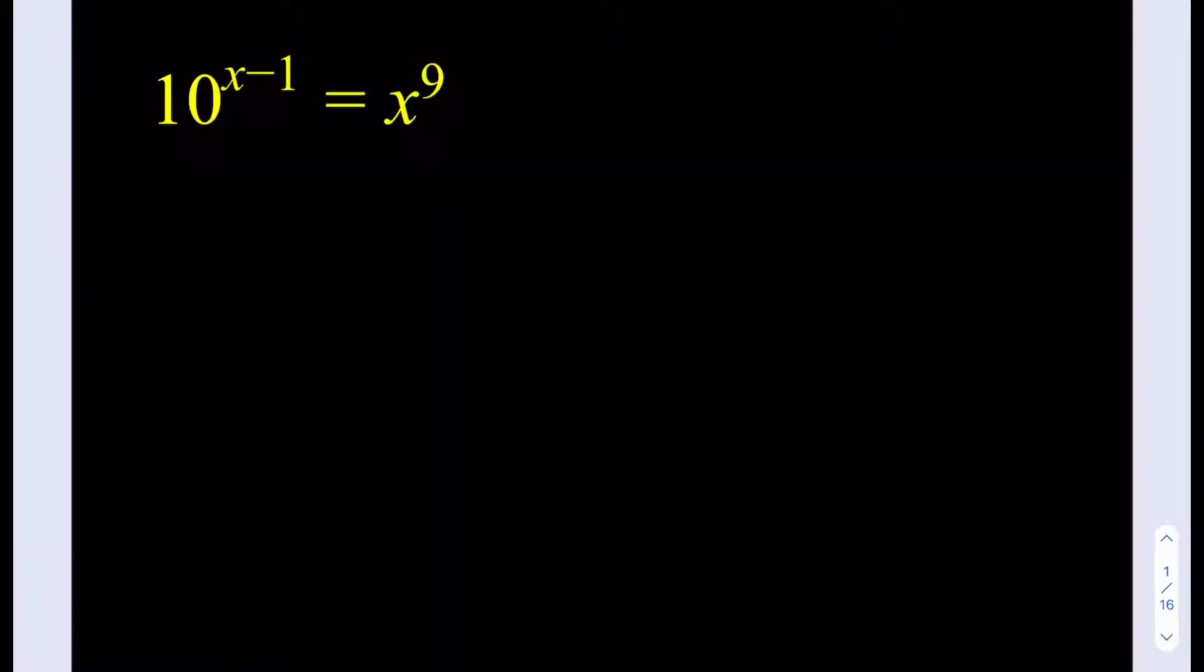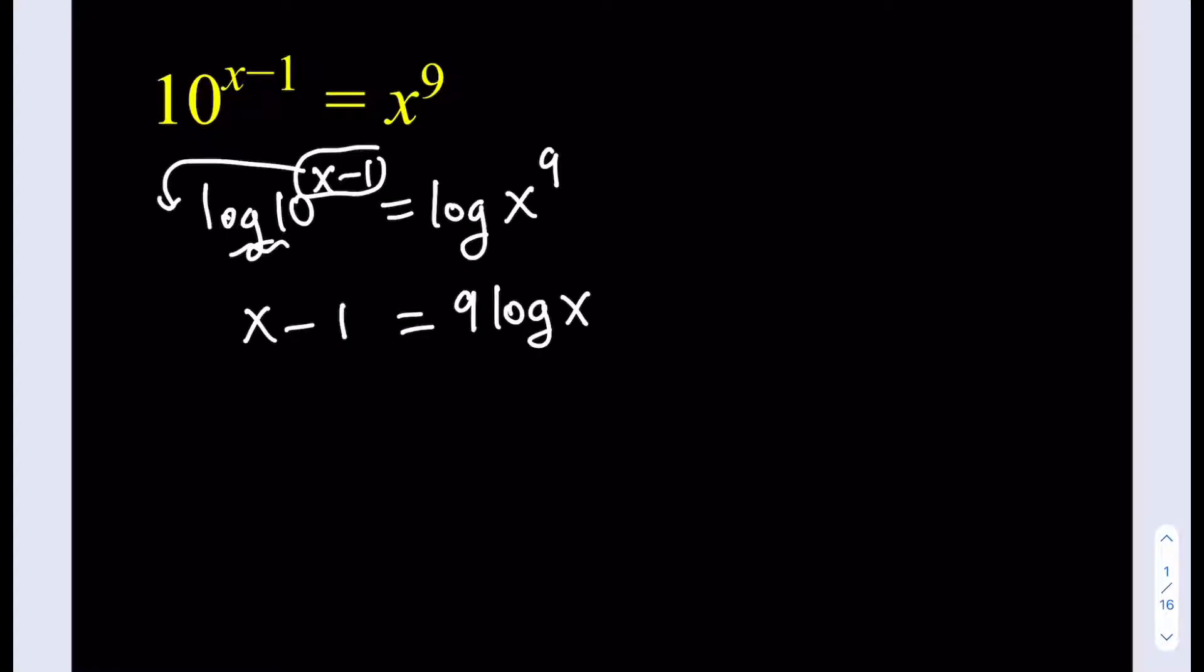So to make this problem easier, we're going to log both sides first. We're going to be putting the log here, 10 to the power x minus 1. That is equal to log of x to the power 9. As you know, the logs are going to bring down the exponents. We're going to bring down this x minus 1 here, but when we do, log 10 is going to equal 1. So we're just going to write x minus 1. And then on the right hand side, when you move the 9 over to the front, it's going to be 9 times log x.